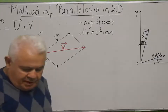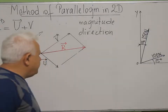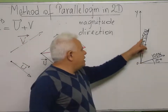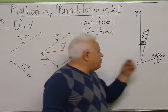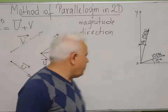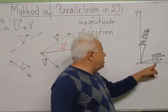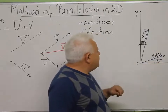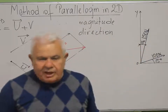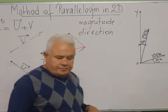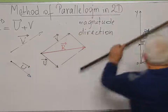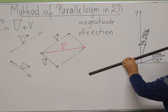Now I'll take an example in mechanics in which I have two forces: one force of 150 newtons and another force of 100 newtons. The first force makes 50 degrees with the horizontal and the second one makes 10 degrees to the vertical. I want to calculate the resultant of these two vectors. I use the method of the parallelogram like I showed before, and I draw the parallel to this side.